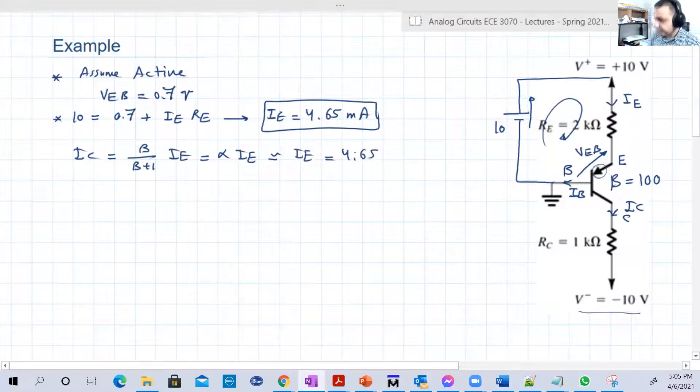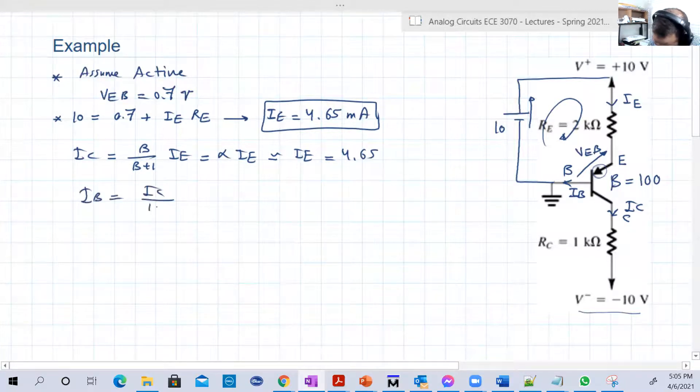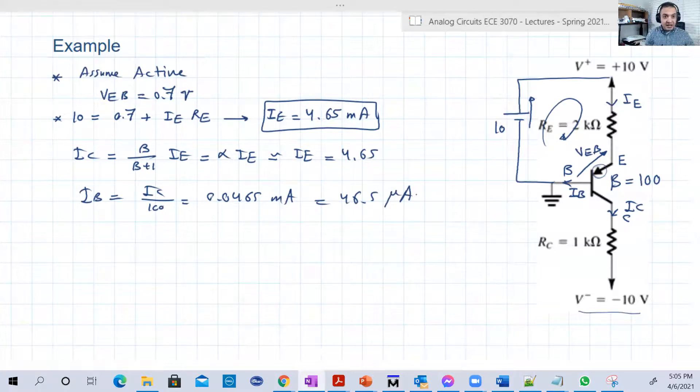And you can determine IB if you want. IB basically will be IC over 100, which is beta, so 0.0465 milliamperes or 46.5 microamperes, whatever you like. Now we should determine VB and VC to compare them to check that really J2, the junction between the collector and the base, is reverse biased. This is very important.